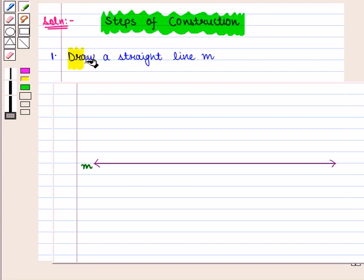First, we shall draw a straight line with the help of a ruler. Here we have drawn a straight line M.